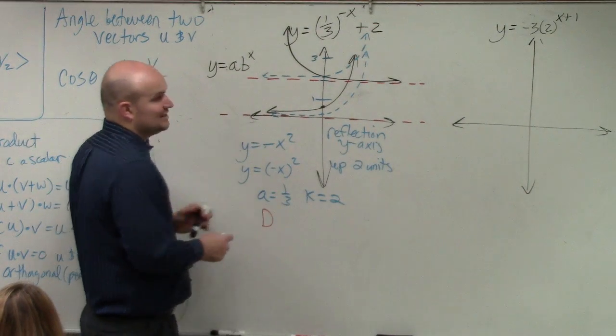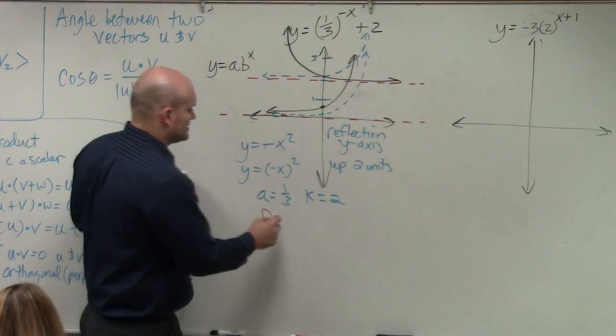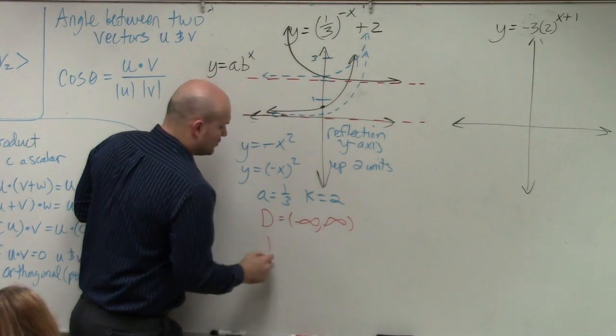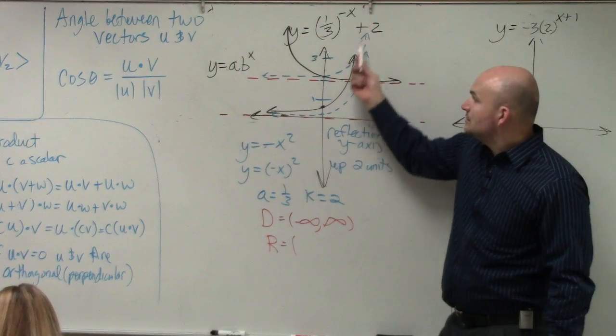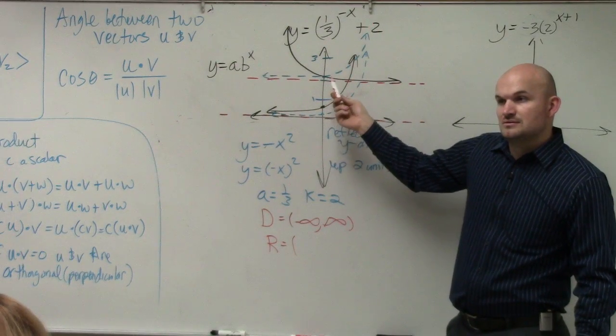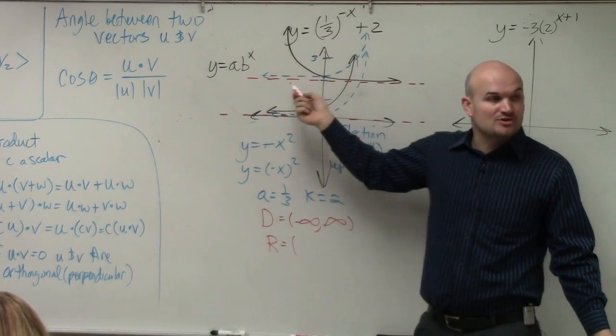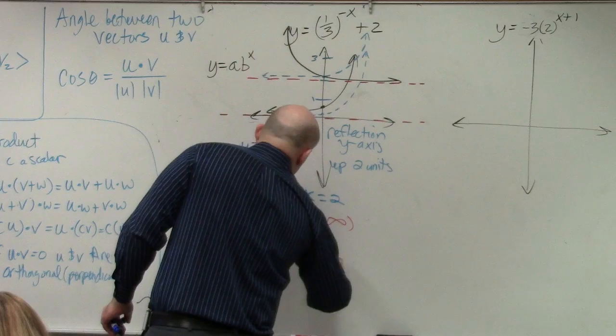The reason why this is important is because when I ask you guys about the domain and range, well, the domain is saying, how far is this black graph going to go to the left? Well, that's going to be negative infinity. How far is the graph going to the right? That's infinity. The range. How low is this graph going? How low is it going? 2. Because now this graph is approaching the asymptote at 2. So it's going to be at 2 comma infinity. Does anybody see that?